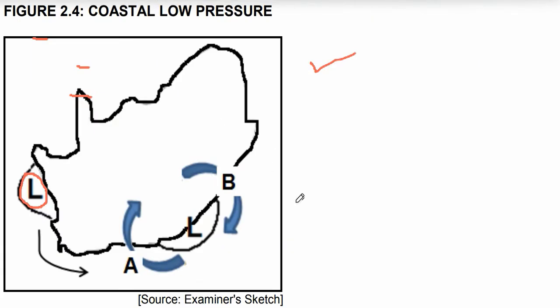As I told you in the lesson, the coastal low pressure system moves from west to east. However, in this diagram you can also say this low pressure system moves south along the west coast and from south to the east coast — which is the same thing as moving from west to east.